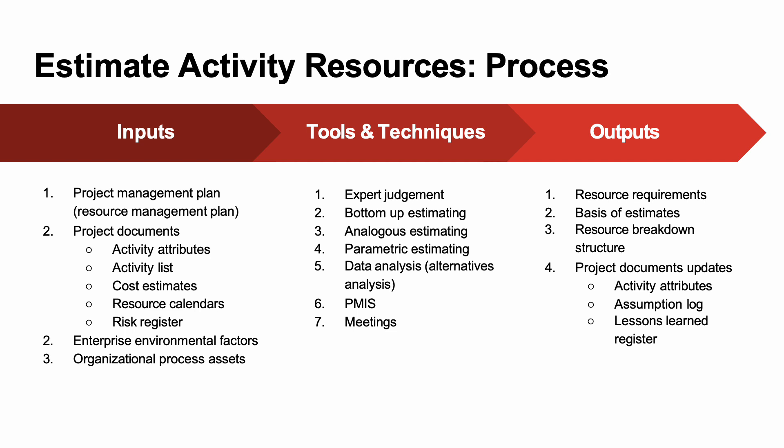Because it's all about activities, the main inputs are things like our activity list from the WBS, cost estimates — which were derived based on understanding of material, equipment, and resource requirements — when resources are needed, and associated risks. The tools for estimating activity resources are the same as for estimating activity durations and costs: expert judgment, bottom-up estimating, analogous estimating, parametric estimating, and so on. The outputs are resource requirements and the basis of estimates.